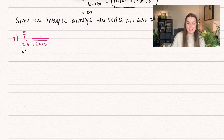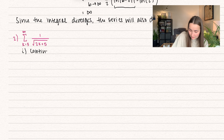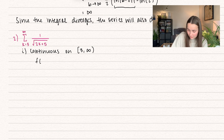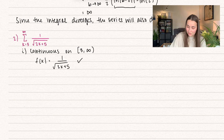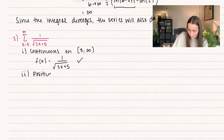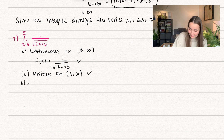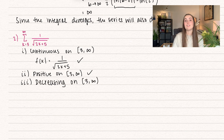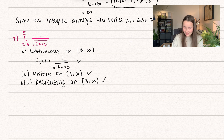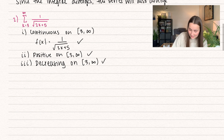Let's try another one. Here we need the function to be continuous on the interval, which is not from 1 to infinity but from 3 to infinity, because k is starting at 3. Our function is 1 over the square root of 2x plus 5, which is continuous — no illegal values in the domain. We also need it to be positive: we're taking the square root of positive numbers, and 1 divided by a positive is positive, so we're good. Finally, we need it to be decreasing. As values we plug in get bigger and bigger, 1 over the square root of larger and larger numbers gets smaller and smaller, so it's decreasing. All three criteria are met and we can apply the integral test.